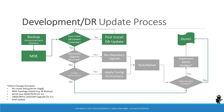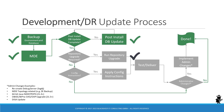Here we can see the update process for development environments where the fast track to a successful update is as follows: take a backup, run the MDE, run the post-installed database update. If you have no repository upgrades, configuration instructions, or administrative changes to implement, you're done. If you need to execute the non-mandatory repository upgrade or apply configuration instructions, you have to do that in the development environment and test and deliver these changes. If you have any administrative changes on your to-do list, you have to implement them as well before declaring success.